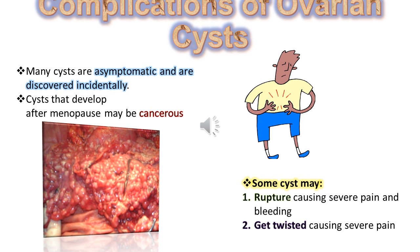Complications of ovarian cysts: many cysts are asymptomatic and discovered incidentally. Cysts that develop after menopause may be cancerous. Some cysts may rupture, causing severe pain and bleeding, or get twisted, also causing severe pain.